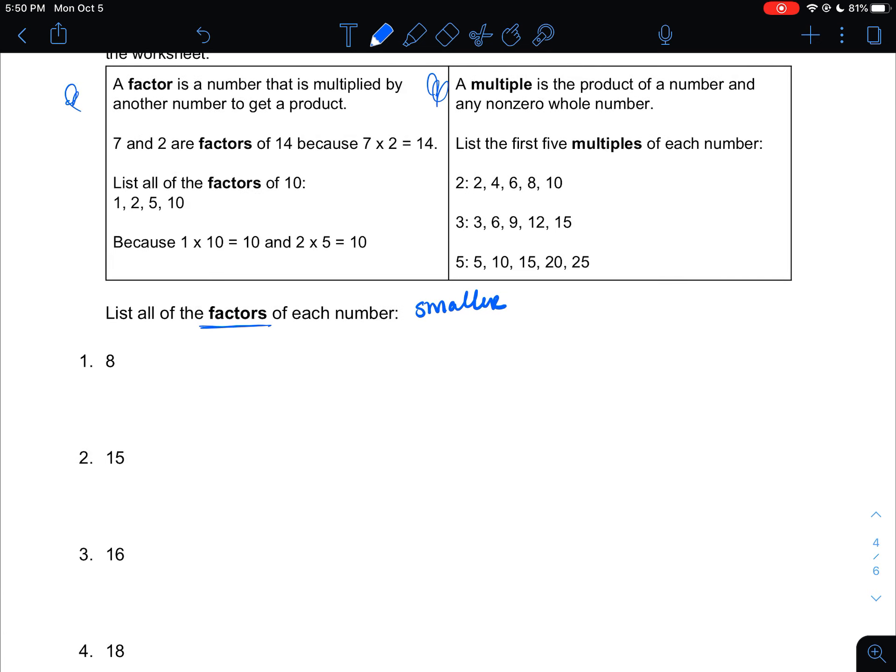Once you're done this worksheet, you will then check with the answer key that is attached to the assignment. And then you have your formative for homework. That is it for today. Tomorrow, we're going to talk about Prime and Composite Numbers, which hopefully is another review. And then from there, we're going to move on and talk about GCF, my favorite thing in the world. If you have questions, please email me. Other than that, I will talk to you tomorrow.